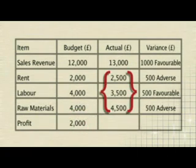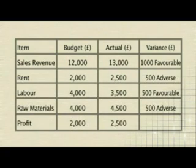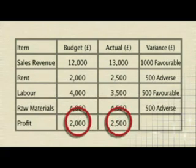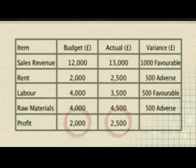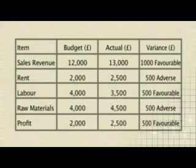For the actual figures, total costs came to £10,500. This taken away from £13,000 revenue gives us £2,500. So the difference between the two profit figures is £500, and because it's more than the budgeted figure, for a profit, it's favourable.